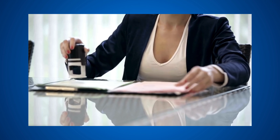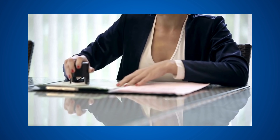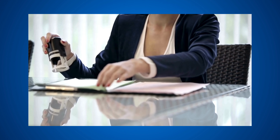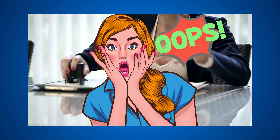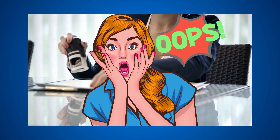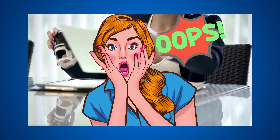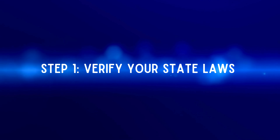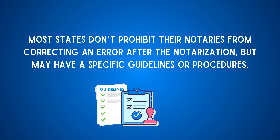The notary completes and signs a notarial certificate on a document, but later learns that they added incorrect information to the certificate, left out required information, or forgot to add their stamped or embossed seal. Most states don't prohibit their notaries from correcting an error or oversight in a notarial certificate after the notarization, and may even have specific procedural requirements or guidelines.